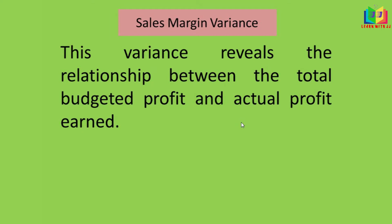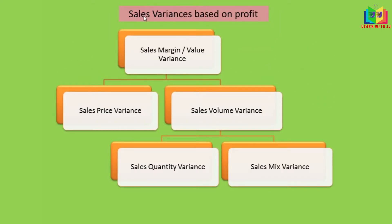This variance is classified into sale price variance and sale volume variance, and the volume variance is further classified into quantity variance and mix variance. This is similar to the sales variance based on value. In this video we'll see the sales variance based on profit, whereas in the previous video we saw sales variance based on value.